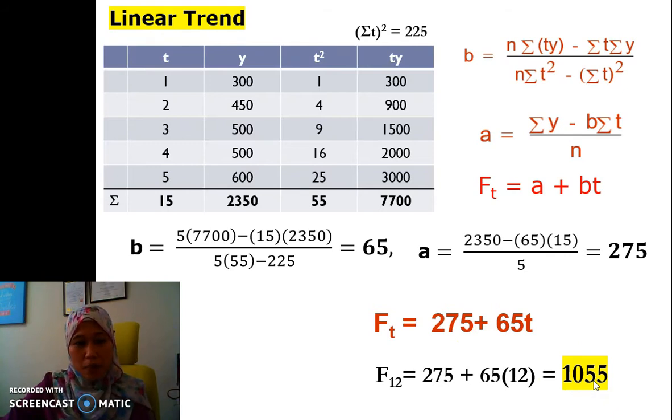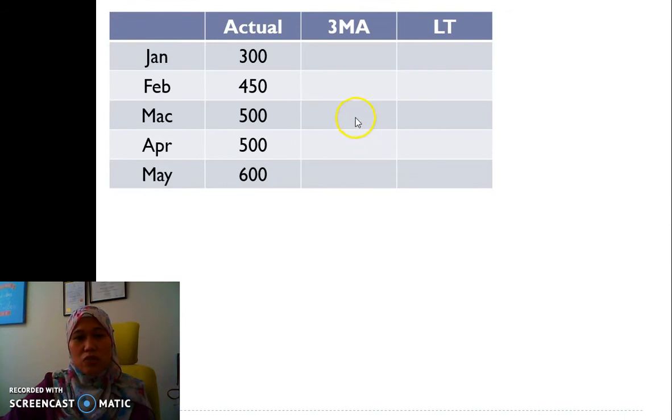So now we need to compare these two methods to decide which one is more accurate. We need to prep the data for the three months. Since we don't have information for January, February, March, we only have for April and May that we calculated earlier. And for linear trend, we calculated the F12, but now we need to fill all the information for January, February, March, April, May using this equation that we got earlier.